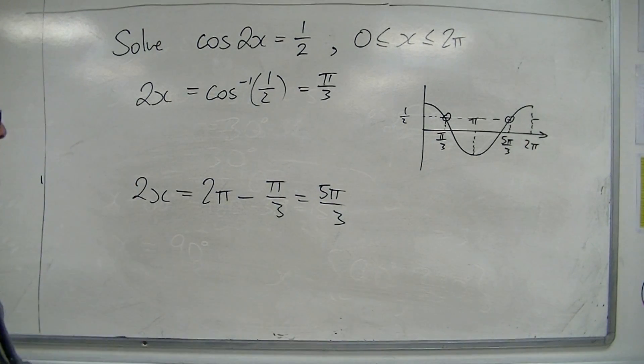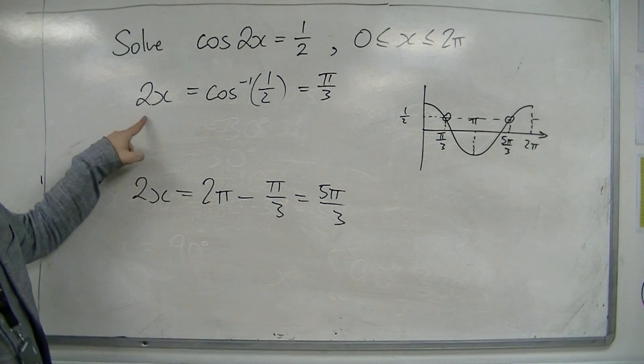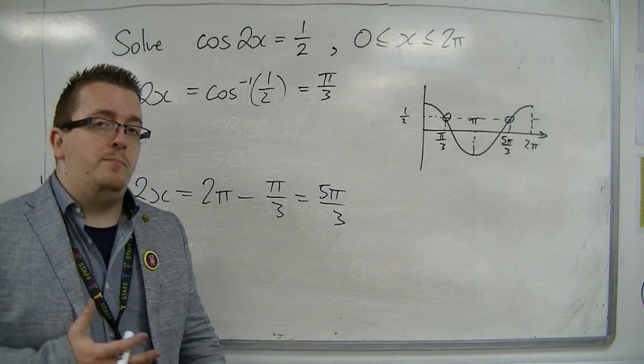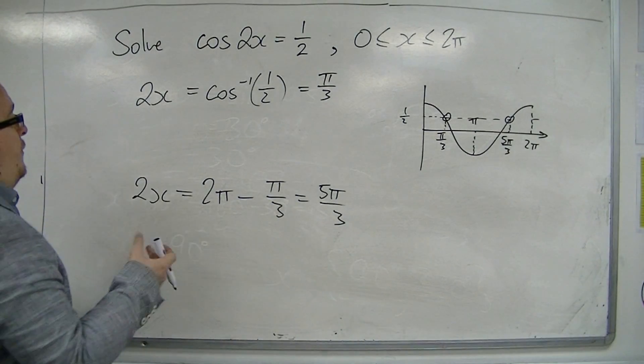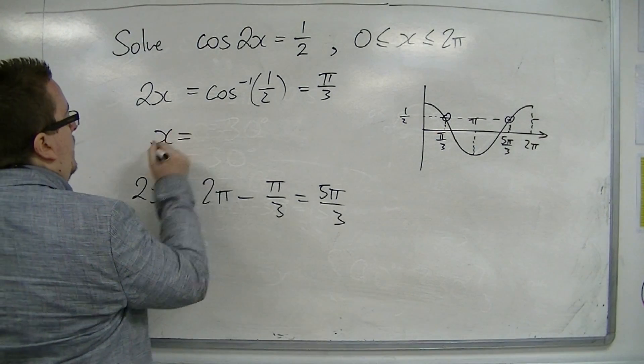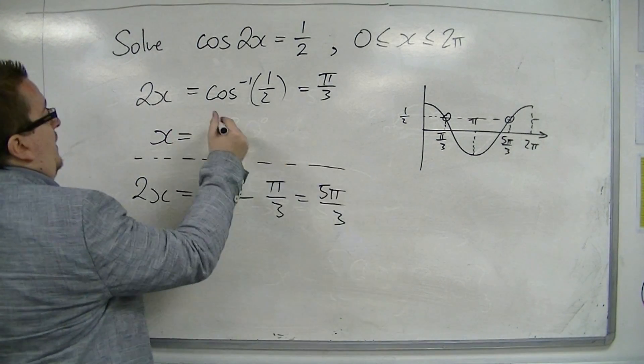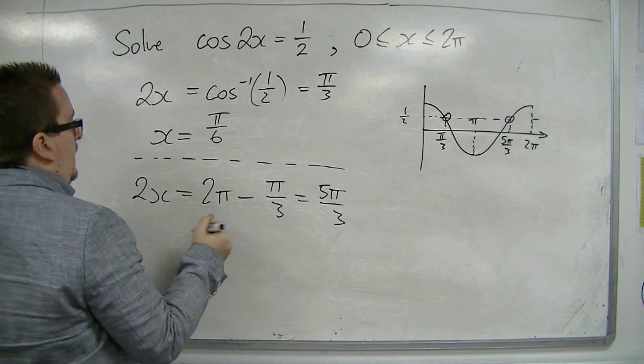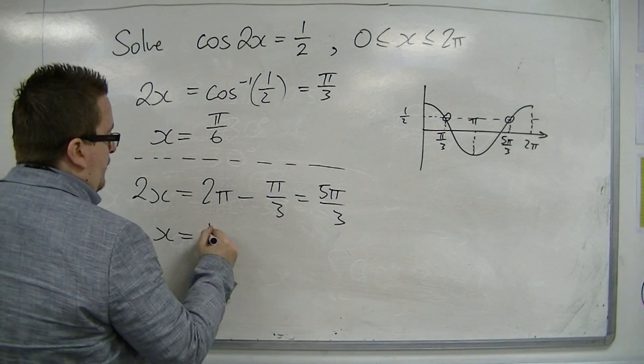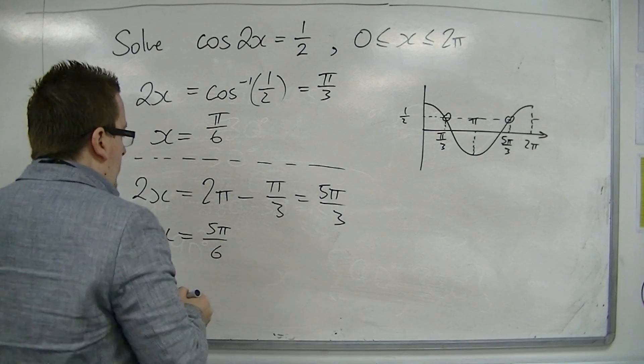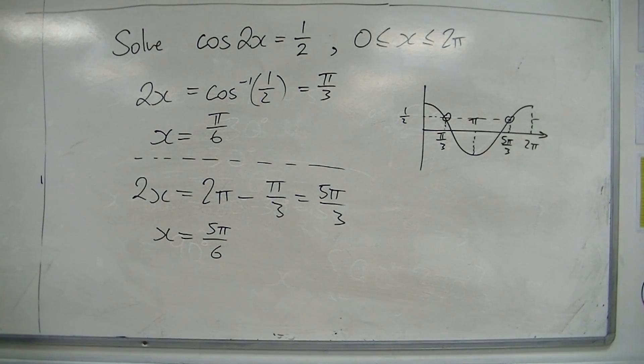Now, what happens at this stage is that because I've got 2x equals pi over 3 and 2x equals 5 pi over 3, I'm now going to divide both sides by 2. So I've got x is equal to pi over 6, and x is equal to 5 pi over 6, and they are 2 solutions.